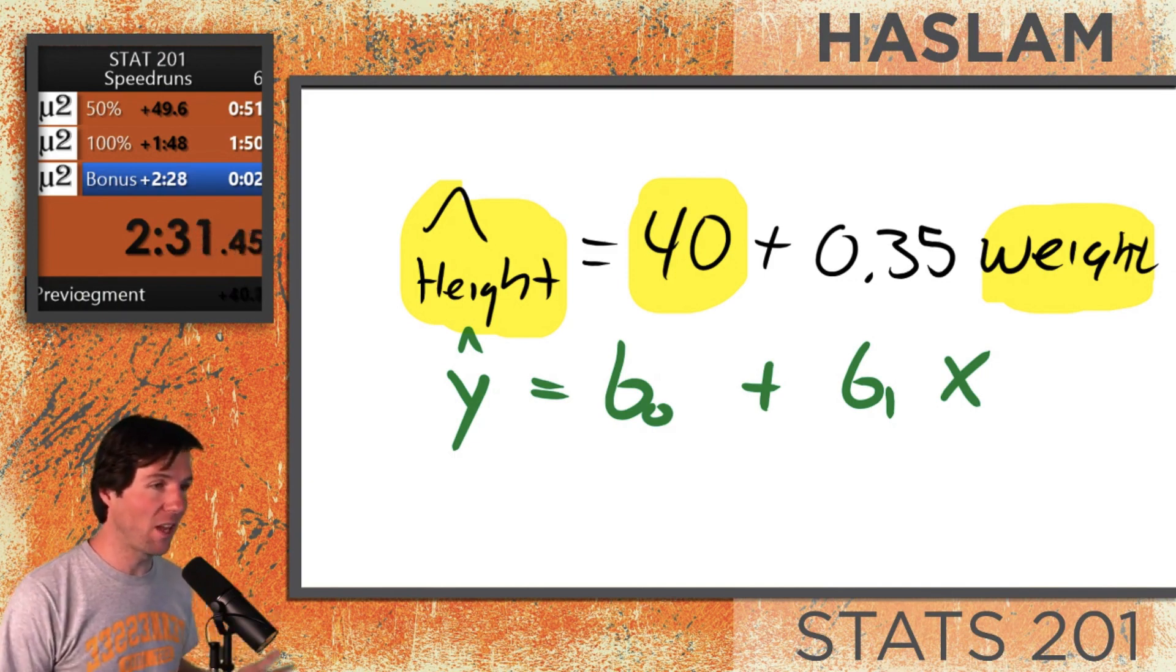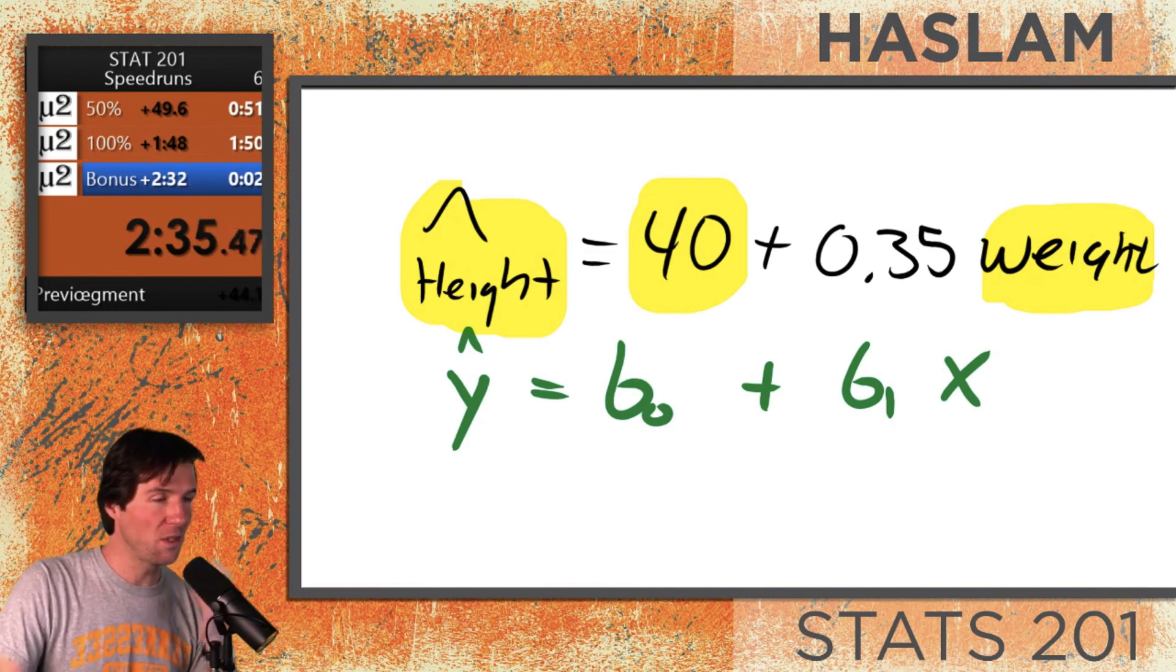So how do you know if the intercept is illogical? Well, think about it. Just read it. When somebody's weight is equal to 0, we expect or predict that their height will be equal to 40 inches.